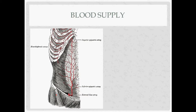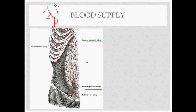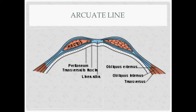Blood supply to the anterior abdominal wall. The most important vessel supplying it is the inferior epigastric artery. The abdominal aorta divides into the common iliacs, which divide into internal and external. The external iliac becomes the femoral artery after the inguinal ligament. Just before that, it gives off the inferior epigastric artery from the external iliac artery. It then meets up with the superior epigastric artery, which we'll discuss further shortly.